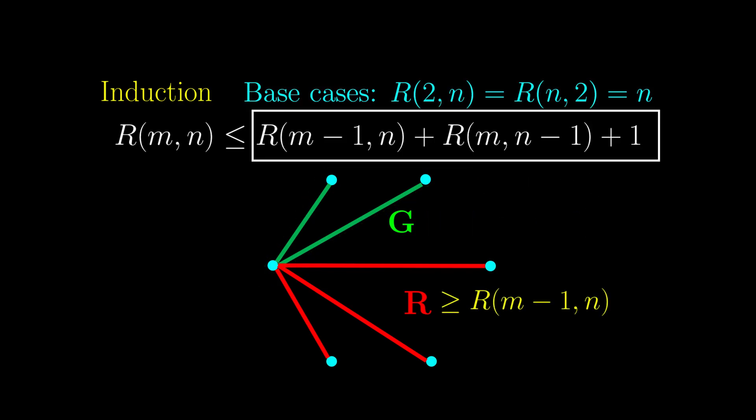Exactly the same argument applies when it happens that r is at least r, then we can always guarantee m red or n green.